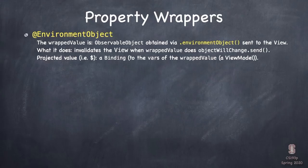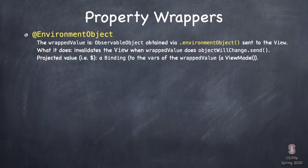@EnvironmentObject's wrappedValue is any ObservableObject, obtained with .environmentObject instead of being passed as a var. What does it do? It invalidates the view when the wrappedValue does objectWillChange.send — exactly the same as @ObservedObject. And its projectedValue? Same as @ObservedObject: you can get at the vars of your ViewModel with the $.